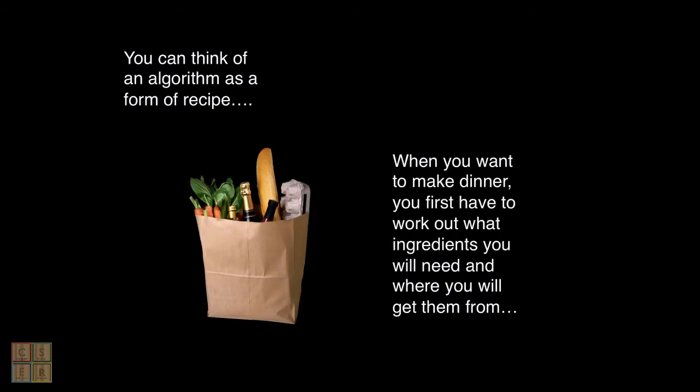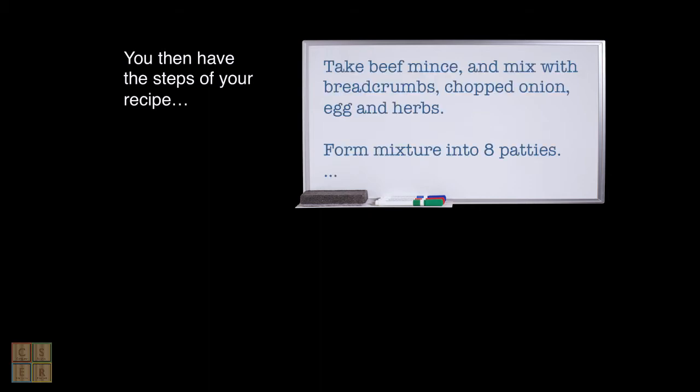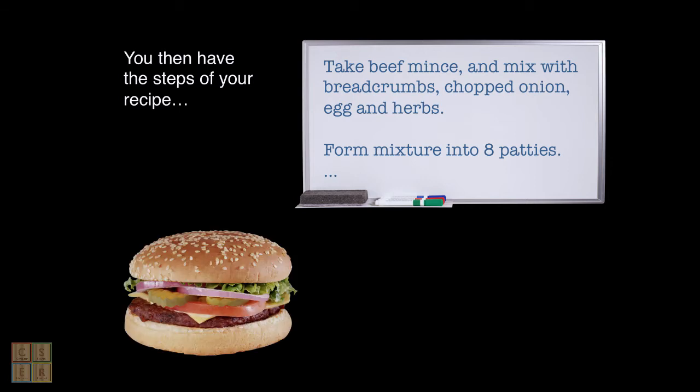When you decide you want to make a particular recipe for dinner, you first start by looking up in a cookbook or thinking about what ingredients you need, identifying what you already have and what you need to buy, and then working out what shops you need to go to in order to buy those extra ingredients. Once you have all of your ingredients, you then start your recipe or your algorithm, following the steps one by one and using your ingredients as they are needed in order to produce your final food — the outcome of your algorithm.